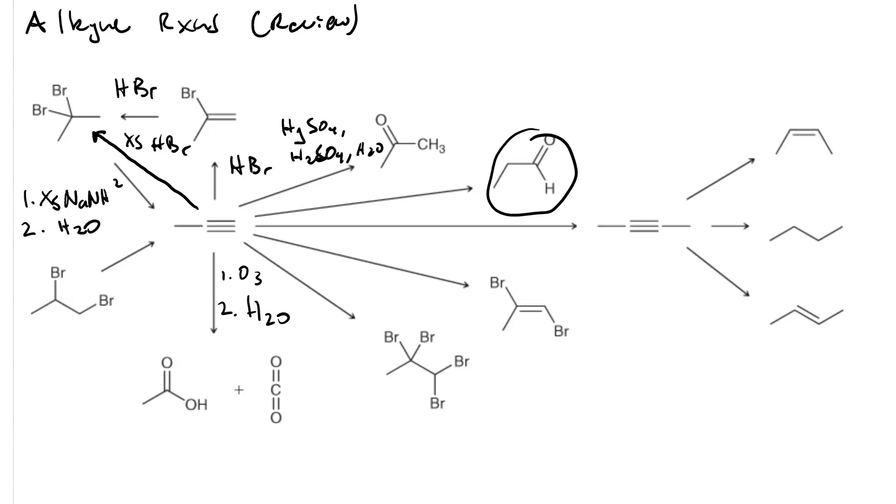To make the aldehyde, that's anti-Markovnikov hydration of the alkyne. So we need to use hydroboric acid, so first, 9-BBN or disiamylborane.